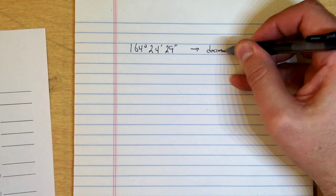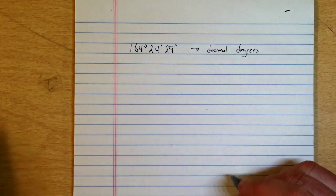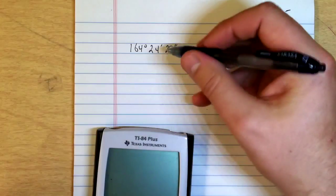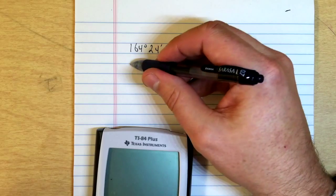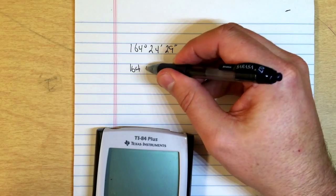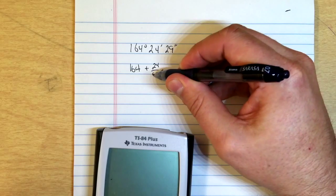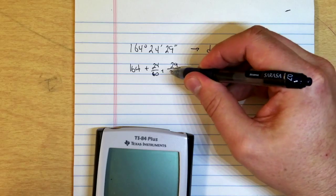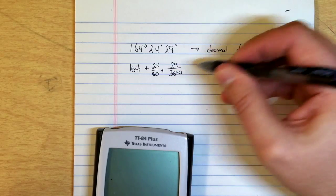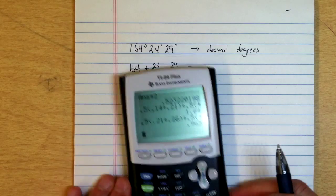Our job is to convert that to decimal degrees. To do that, we take our calculator and what we need to know is: the 164 degrees plus the minutes divided by 60, and the seconds divided by 3600.